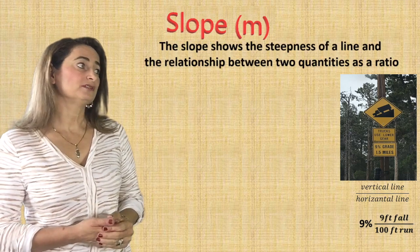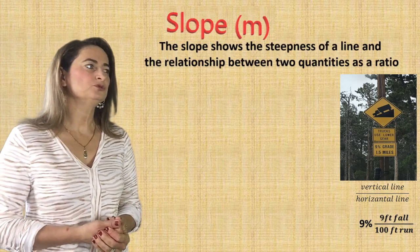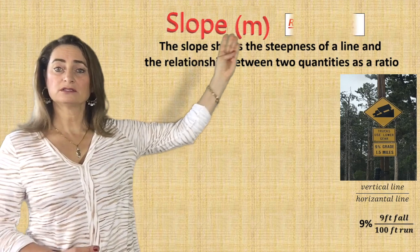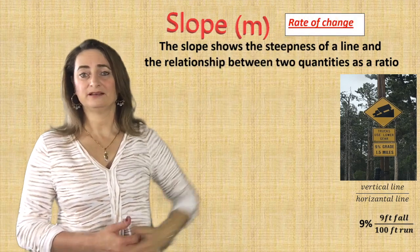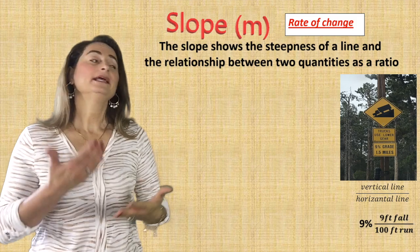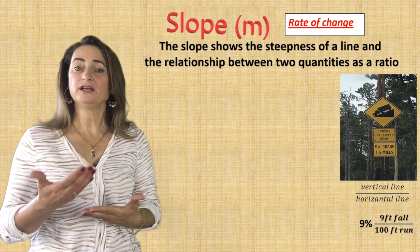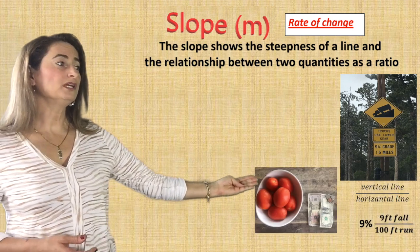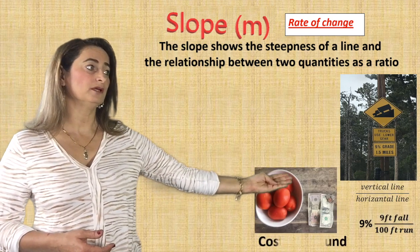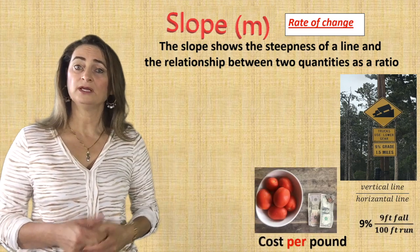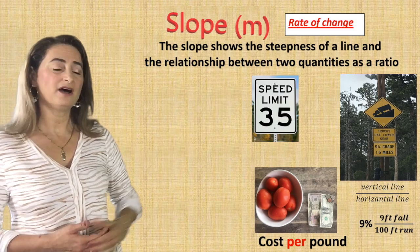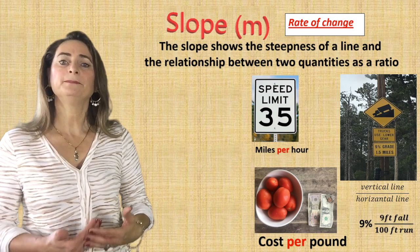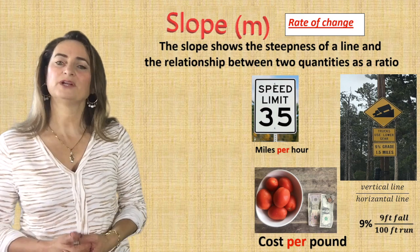The slope shows the steepness of the line and the relationship between two quantities as a ratio. We call the slope a rate of change because it shows the change in the ratio between the two quantities. For example, the relationship between the pounds of tomato and the cost per pound. Speed limit 35 means 35 miles per hour — so the word 'per' means a slope or a rate of change.